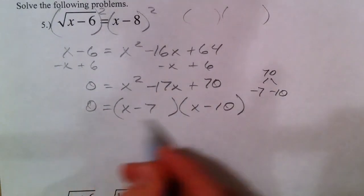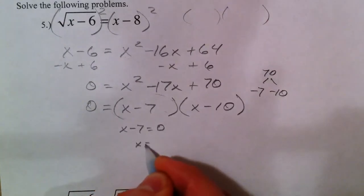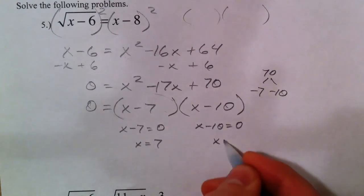So, if those two equal 0, we set this equal to 0. x minus 7, so x equals 7. x minus 10 equals 0. x equals 10.